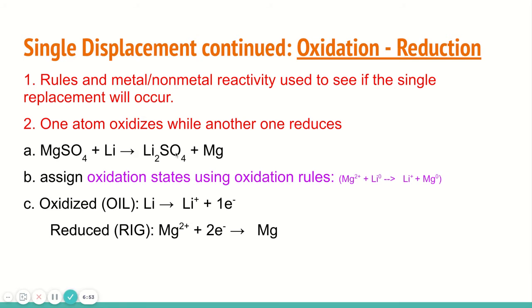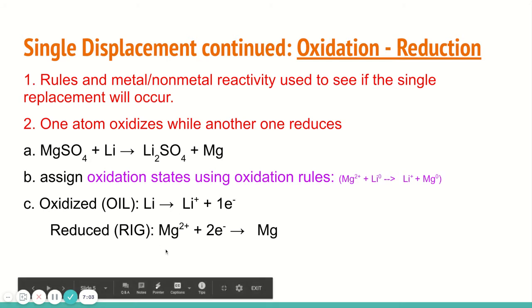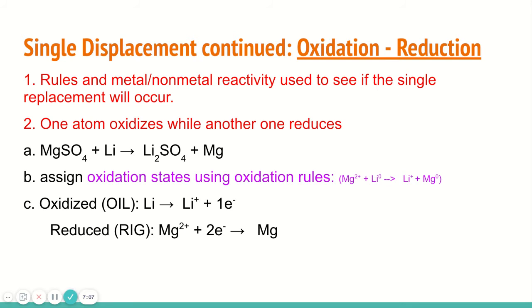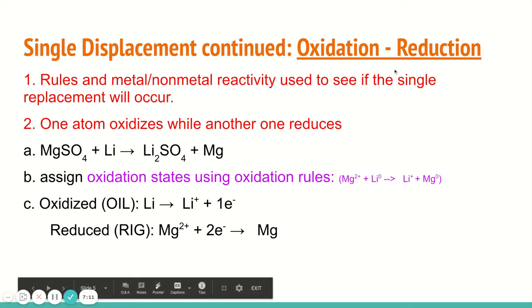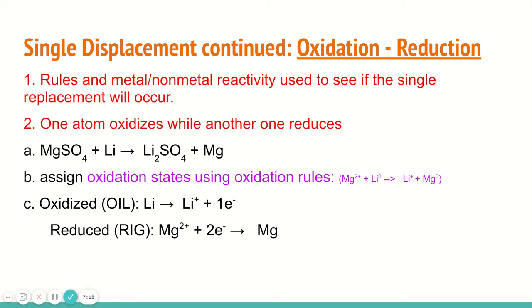Reduction is gaining electrons. So reduction is gaining RIG, OIL RIG, oxidation is losing, reduction is gaining. Here we see magnesium two plus gaining the two electrons to become magnesium with the oxidation state of zero. This all starts with assigning oxidation states. The reason sulfur and oxygen weren't included in these half reactions is because their oxidation states didn't change. Oxygen was negative two both times and sulfur was positive six both times. So on both sides of the reaction, the oxidation states didn't change. Later we're going to learn how to tell if a reaction will take place based on the oxidation states.